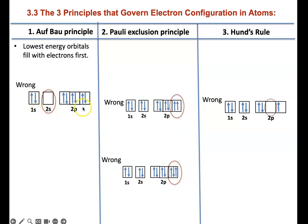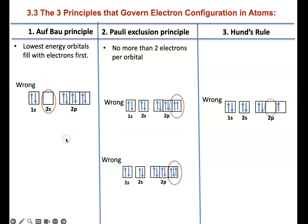If you look at this circled region, the lowest energy orbital in energy level 2 is the s orbital. It has not filled, and the higher one — p — has filled before it. This is incorrect. S must always fill according to the Aufbau electron filling diagram before p.